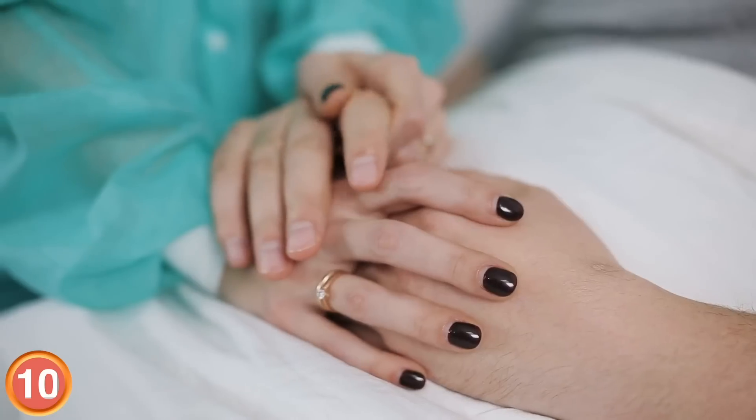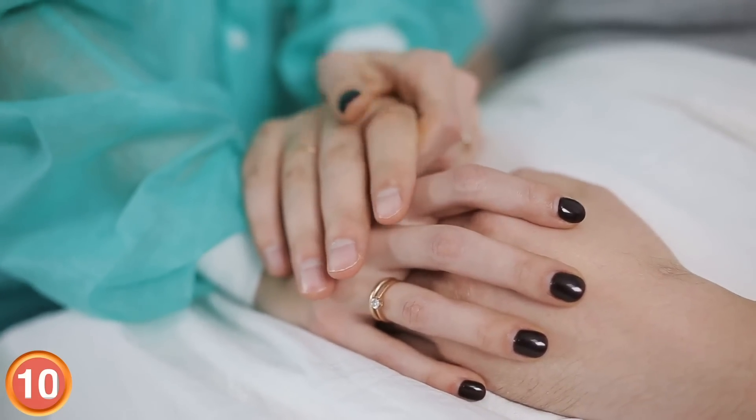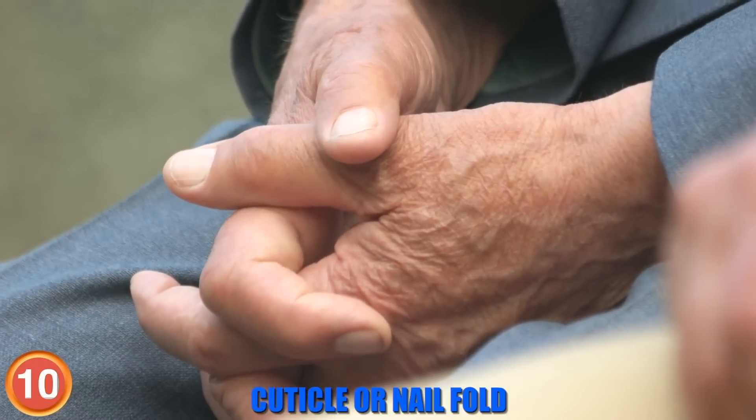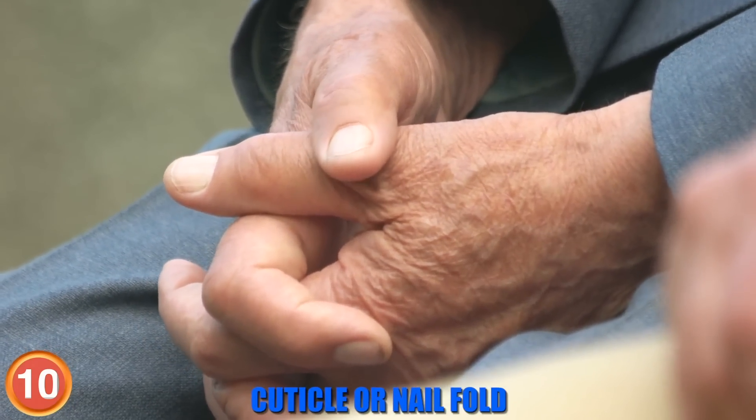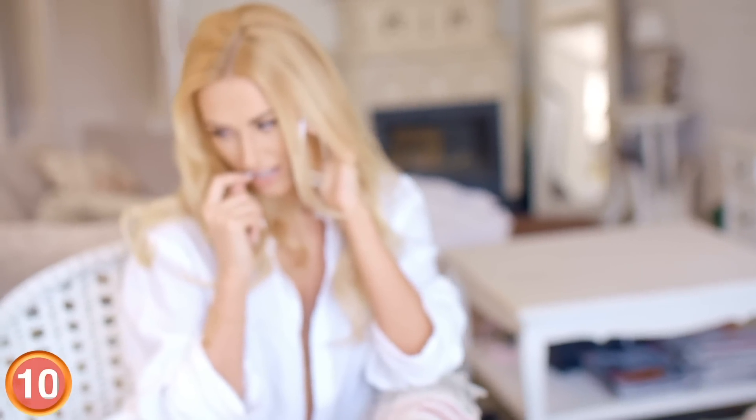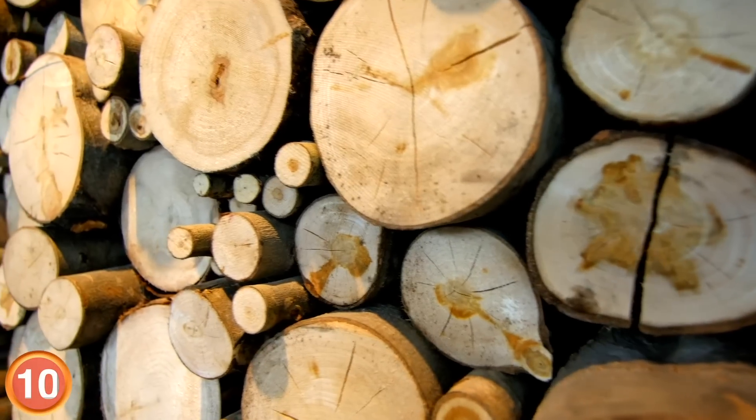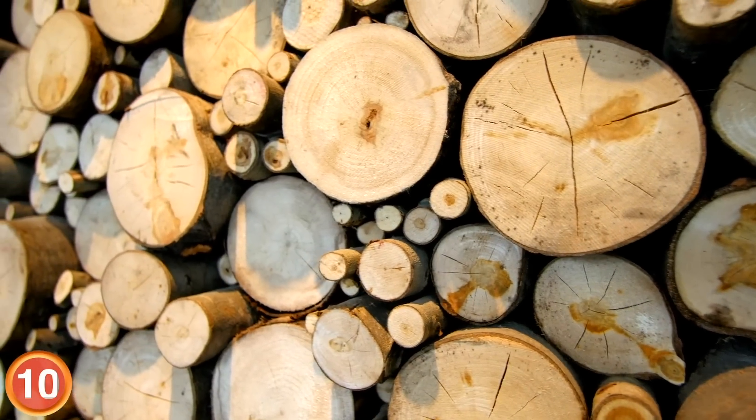Paronychia is typically the result of a bacterial infection caused by trauma to the cuticle or nail fold. It can come from picking a hangnail, nail biting, ingrown nails, or injuries associated with splinters and thorns. Fortunately, a swift round of antibiotics usually gets rid of paronychia. Pop quiz, hot shot!